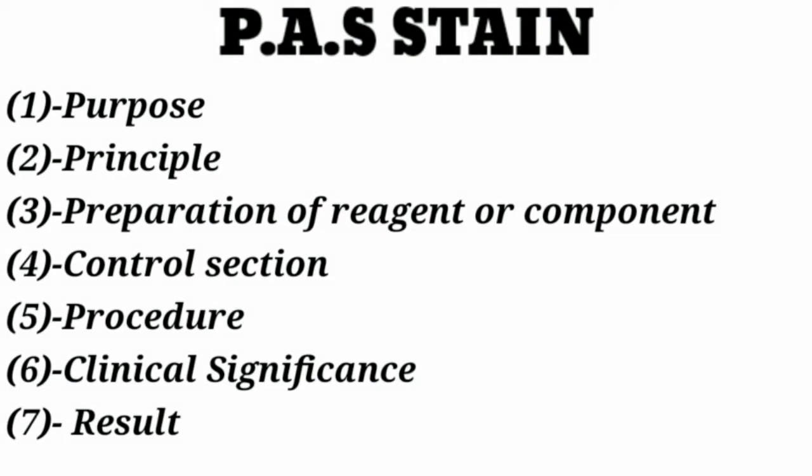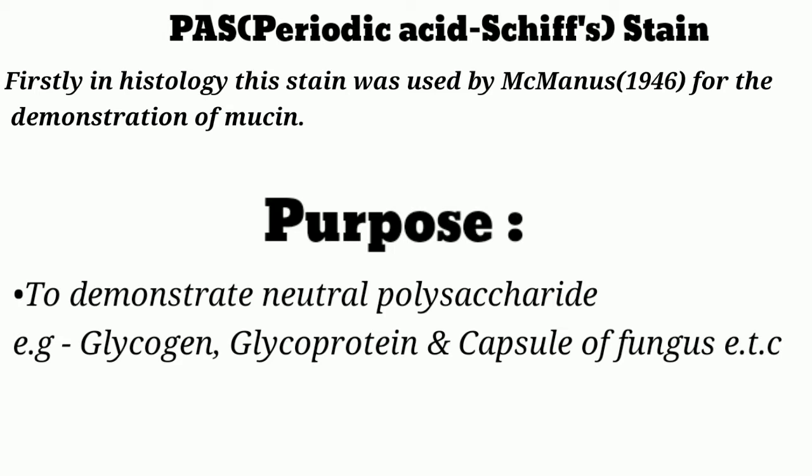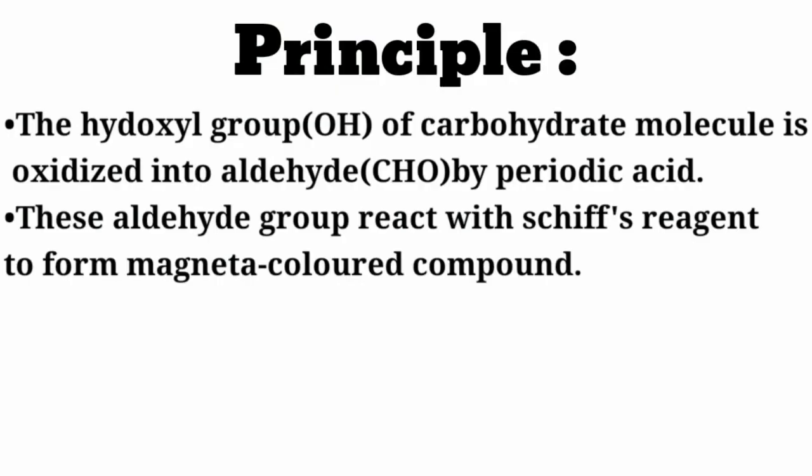Periodic Acid-Schiff stain — firstly in histology, this stain was used by McManus in 1946 for the demonstration of mucin. The main purpose of PAS stain is to demonstrate neutral polysaccharides, for example glycogen, glycoprotein, and the capsule of fungi, etc.